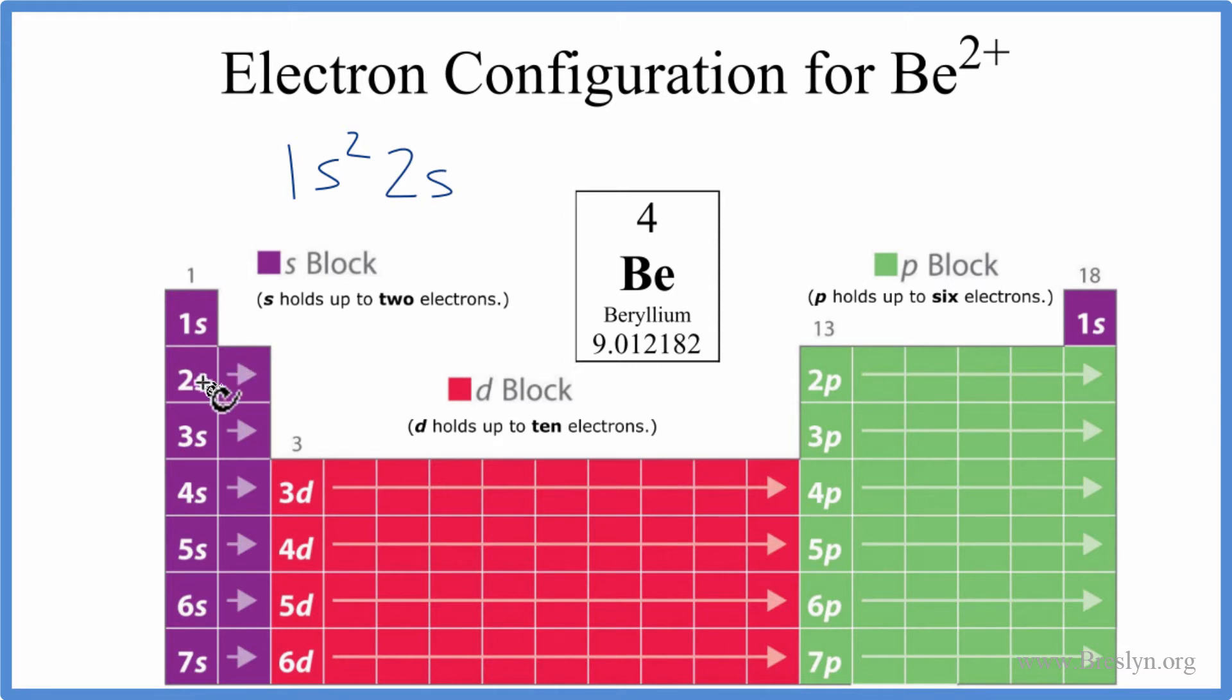2s, we have 2s1, 2s2, and if we count these up, 2 plus 2 is 4. We've used all the electrons. So this is the electron configuration for beryllium, the neutral atom.